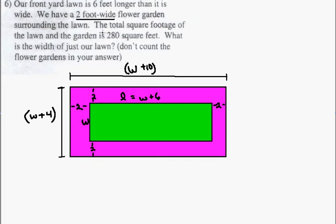You notice that the total square footage of the lawn in the garden is 280 square feet. So if we use the rectangle formula, area formula, area is equal to length times width.